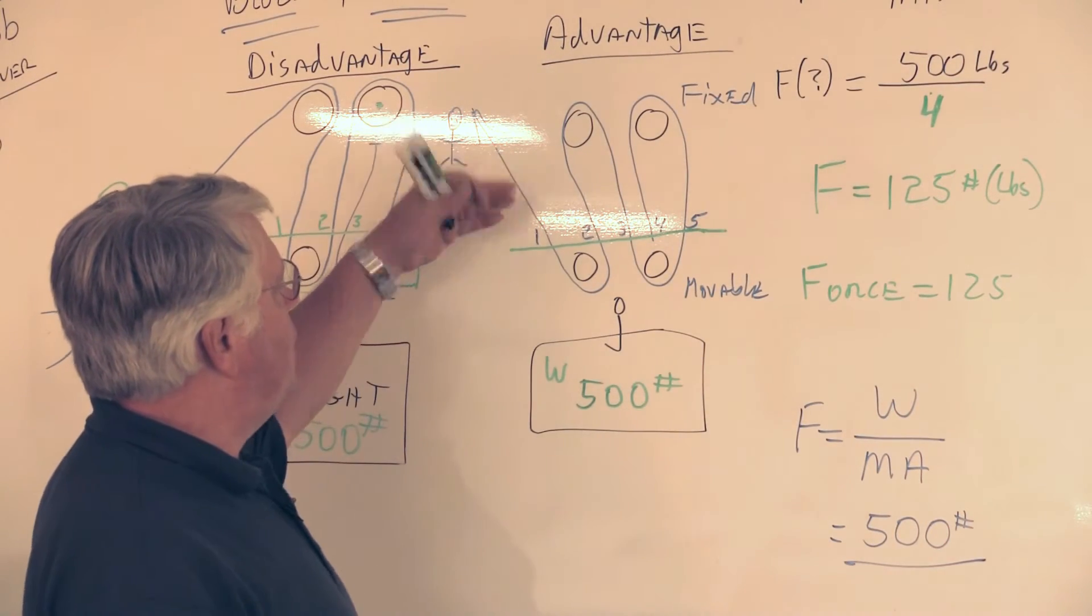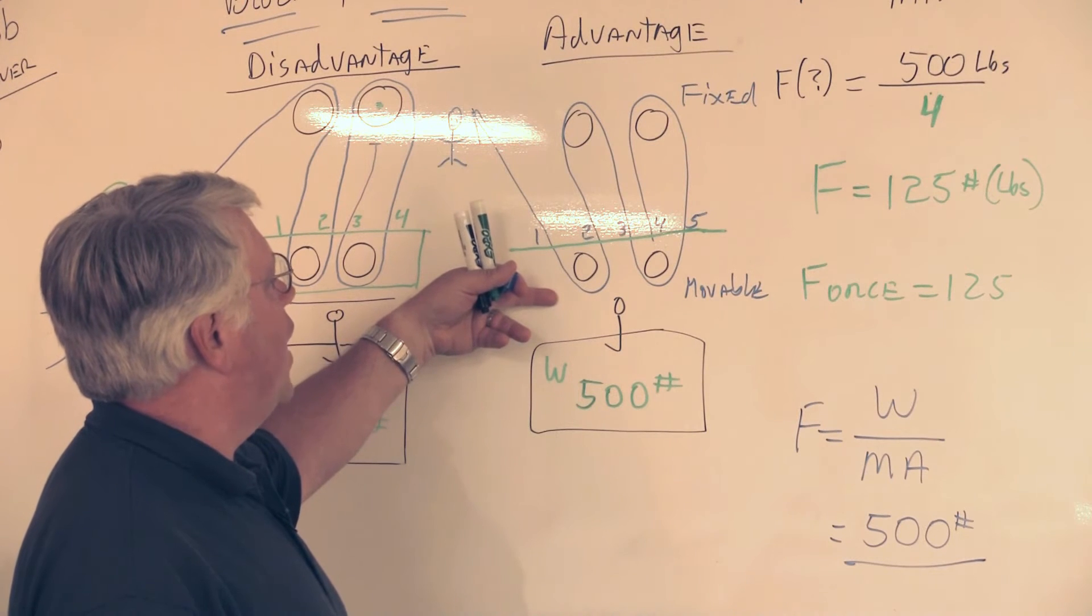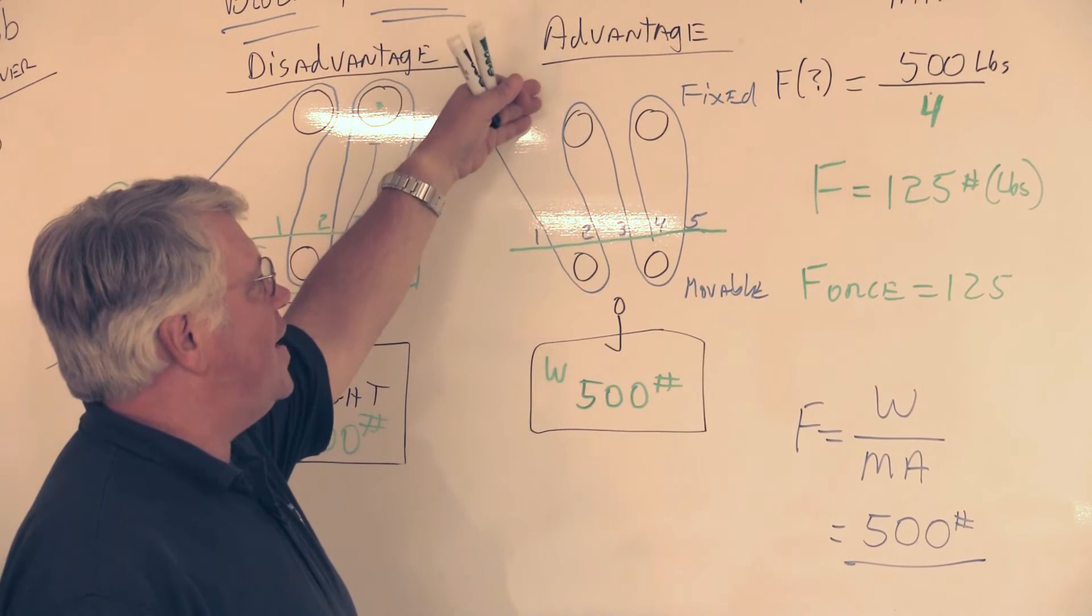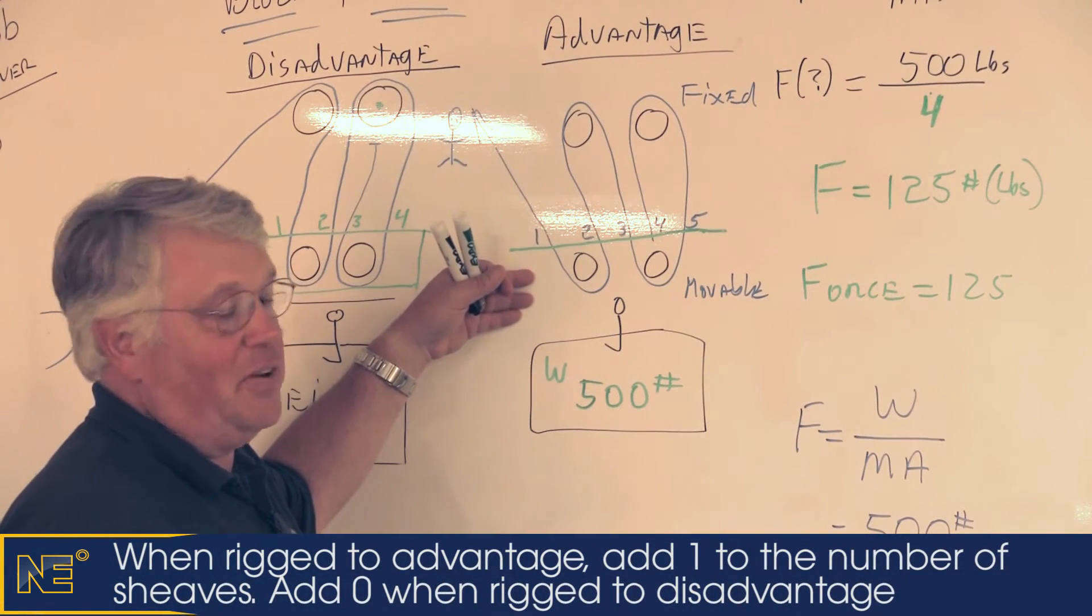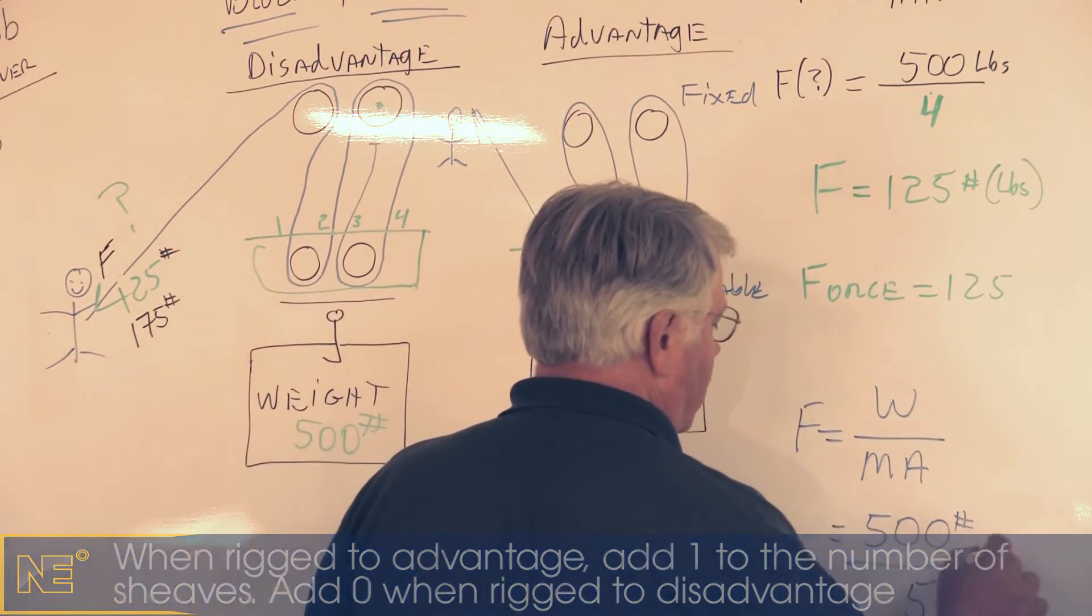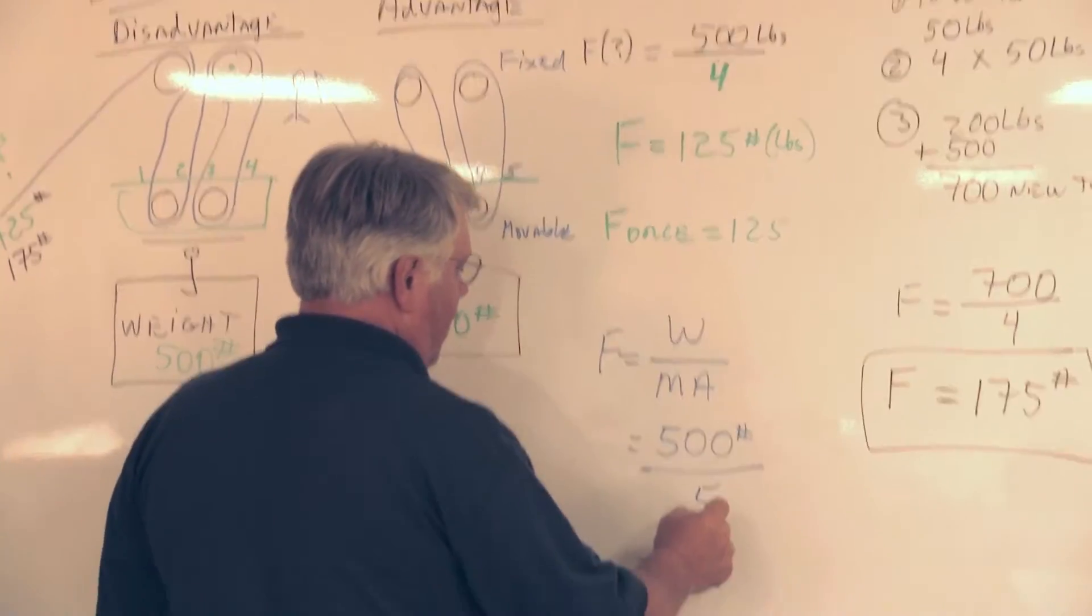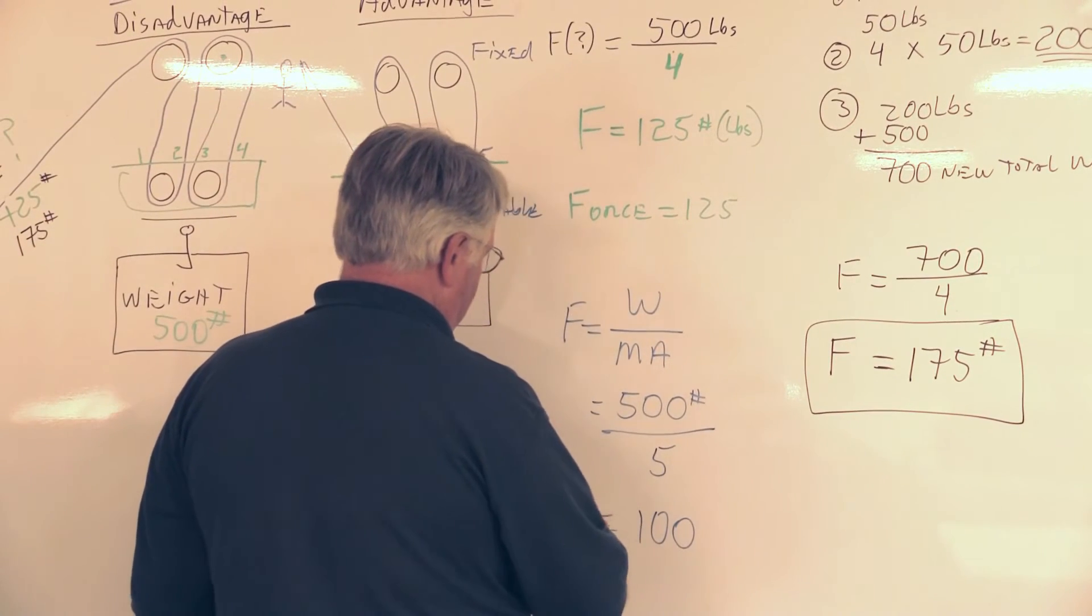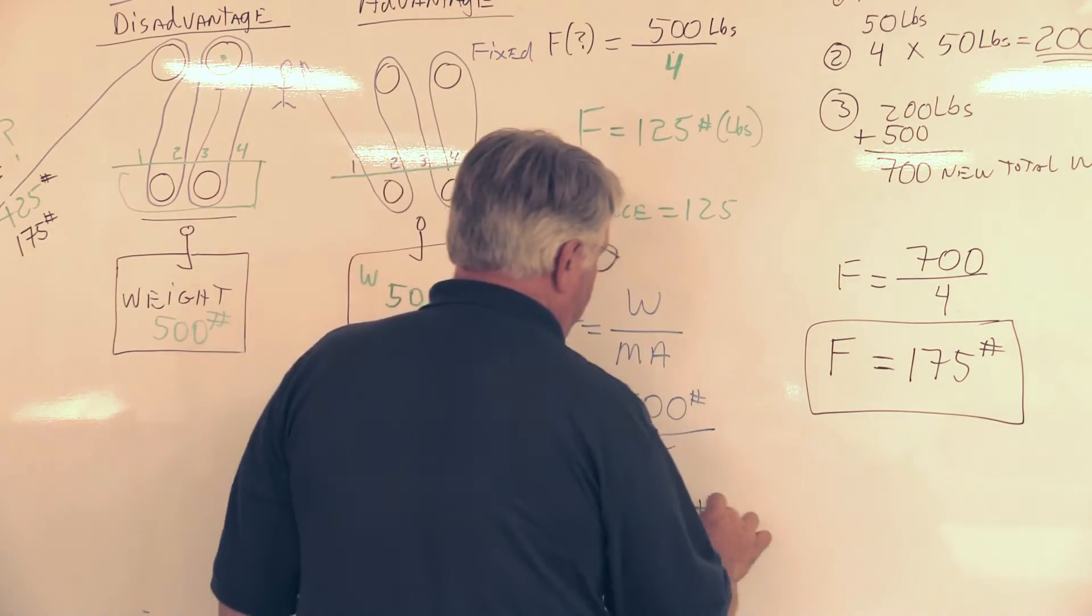By flipping the system over and having the hauling part come from the movable block, I've added one more fall. Therefore, it's an advantage to rig it this way. That's simply where advantage and disadvantage come from, those terms. So now if I put five into my formula, because that's the new mechanical advantage, I divide five into 500 and what do I get? That's pretty straightforward. We're pretty smart folks. And so the force is equal to 100 pounds.